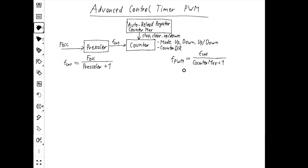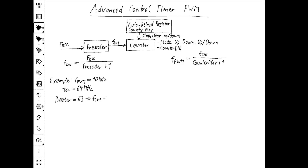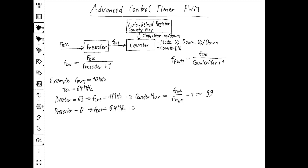The PWM frequency can be calculated as the frequency of the counter over the counter max plus one. For example, if we want a PWM output of 10 kHz and the input frequency is 64 MHz with a prescaler of 63, we have a counting frequency of 1 MHz. This gives us a counter max calculated as the counting frequency over the desired PWM frequency, which is 99. Now, if the prescaler is zero and the counting frequency is 64 MHz, the counter max would have to be 6,399.